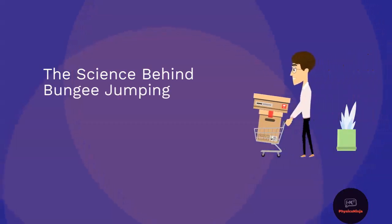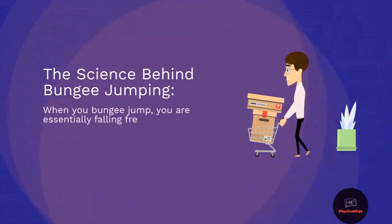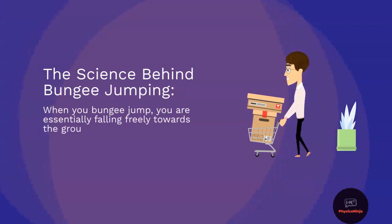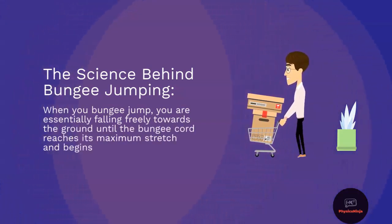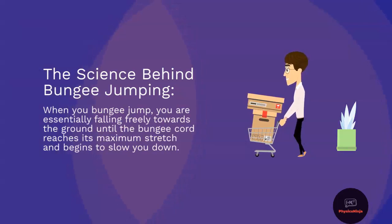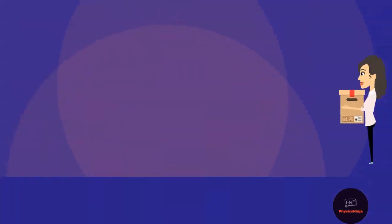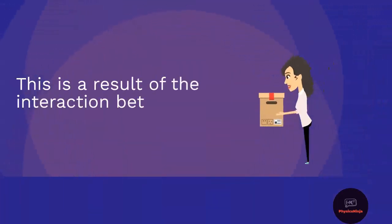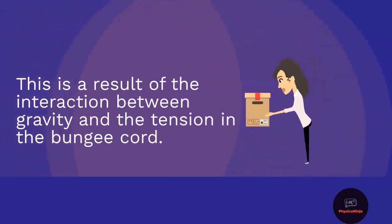When you bungee jump, you are essentially falling freely towards the ground until the bungee cord reaches its maximum stretch and begins to slow you down. This is a result of the interaction between gravity and tension in the bungee cord.